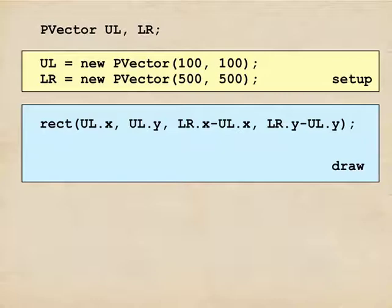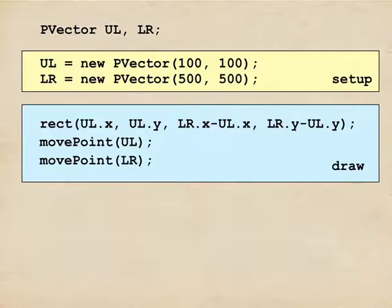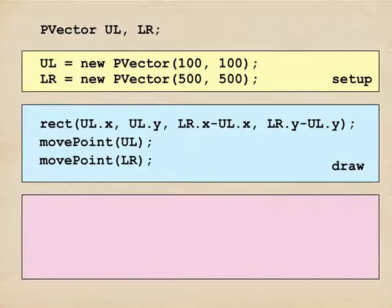For the next frame, I want to draw a slightly different rectangle. So I'm going to call a routine that I'll show you in just a second called move point. It takes one argument, which is a p-vector, and it just moves it around a little bit. And I'll move the lower right point too. And that's all draw does. On the next frame, we come back in, we draw a new slightly different rectangle. We move the points and so on every time we call draw.